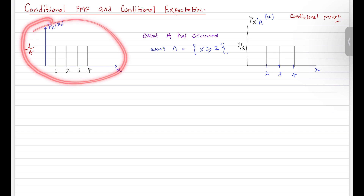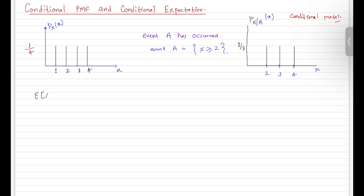Going back to the ordinary probability mass function, if I ask for the expected value of X: since this is a uniform random variable, by symmetry the expected value or mean is at 2.5. You can verify using the definition — the sum over all values times their probabilities — which gives (1/4)(1 + 2 + 3 + 4) = 2.5.